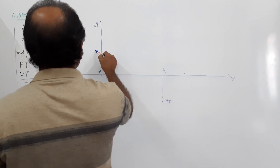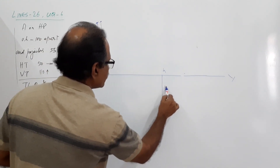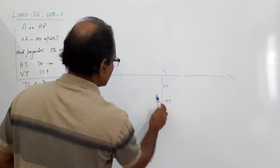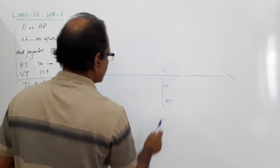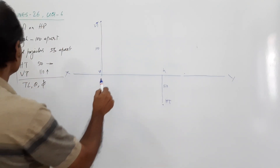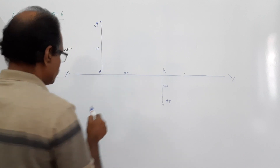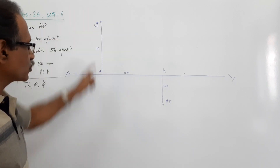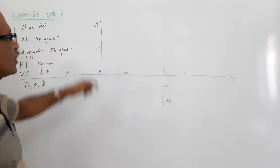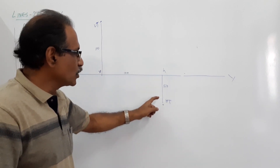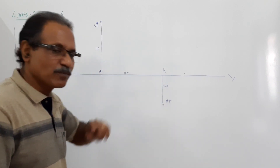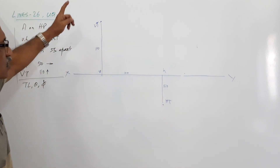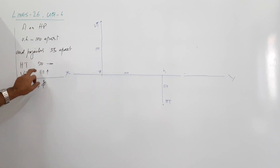We locate V and H 100 mm apart. On the projector through H, locate VT — 110 mm above, because VT is 110 mm above HP. On the projector through H, locate HT — 50 mm below XY, because HT is 50 mm in front of VP.